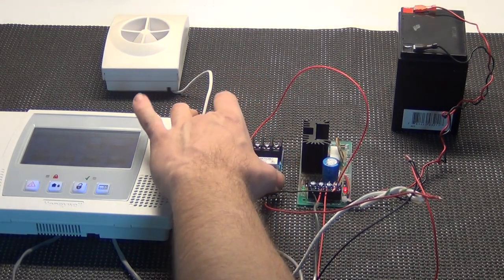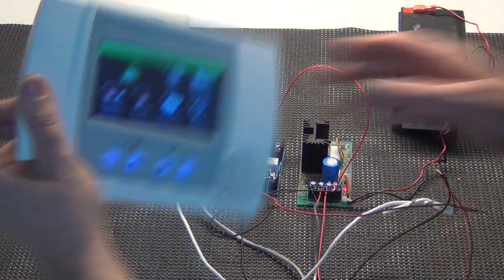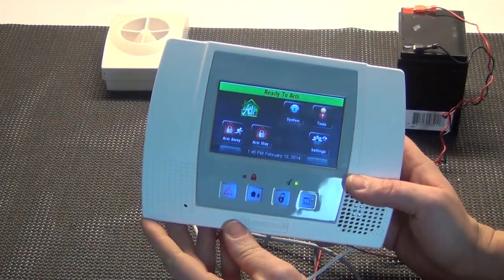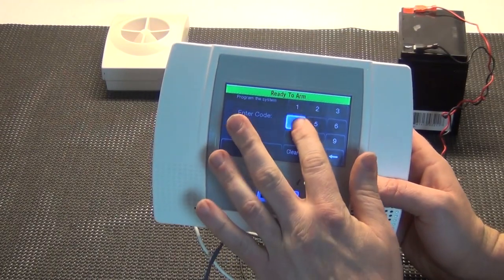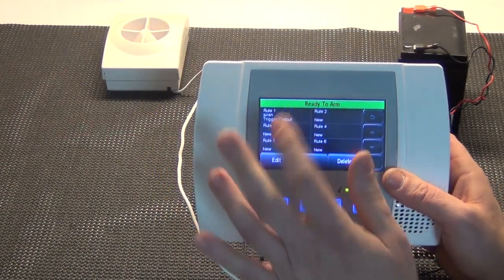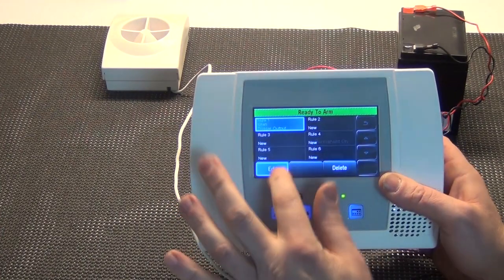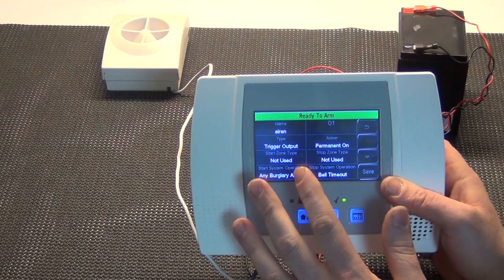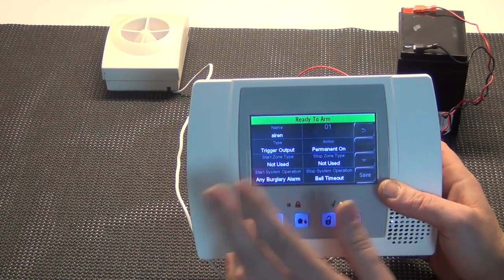Now there are some programming instructions to do here. We need to hit the more tab, then we go to tools, enter in your installer code, then we go to rules and rule number one, edit. I already have this set up, but what you need in this section for rule number one, just name it siren.